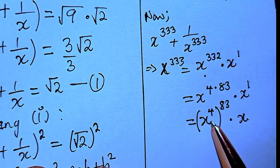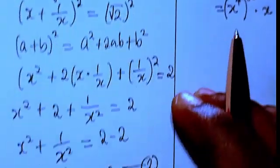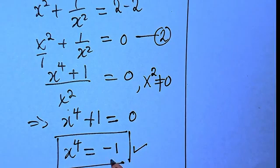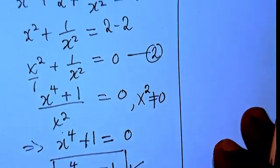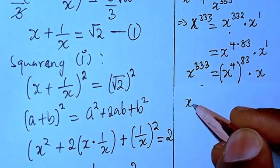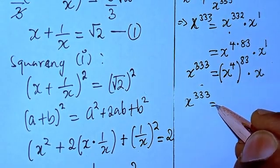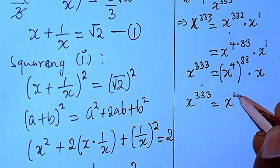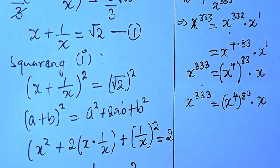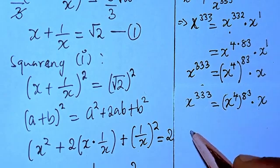This is the key idea — we got x⁴ = -1 precisely so we can do substitution. So x³³³ + 1/x³³³ can be rewritten as (x⁴)⁸³ · x + 1/((x⁴)⁸³ · x).